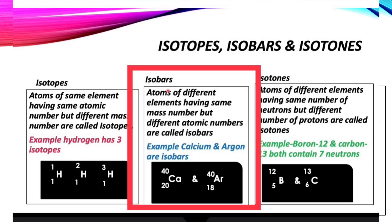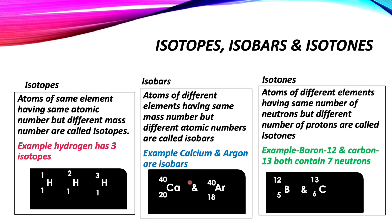Isobars: atoms of different elements having the same mass number but different atomic numbers are called isobars. For example, calcium and argon — their atomic numbers are different, but they both have the same mass number.